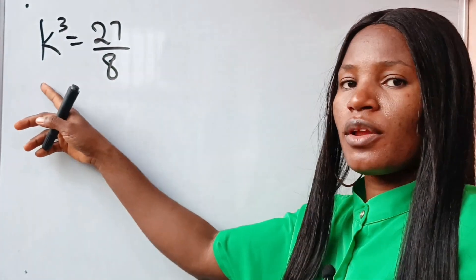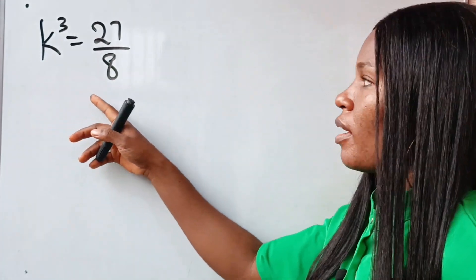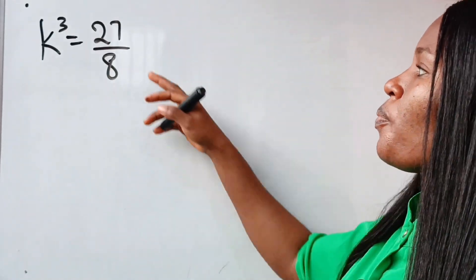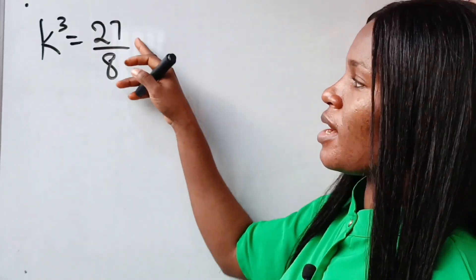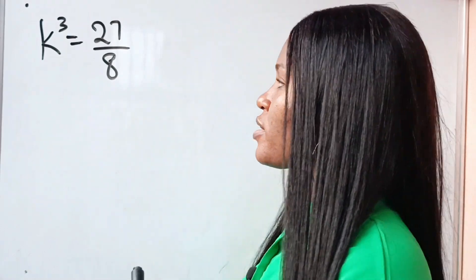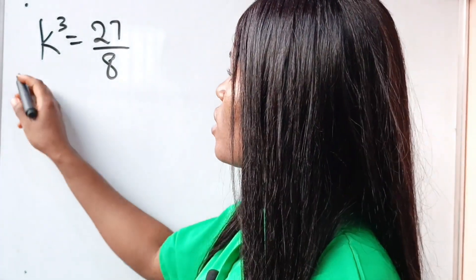We are asked to find the three values of k. First, we are going to express this as perfect cubes, since they are perfect cubes already.